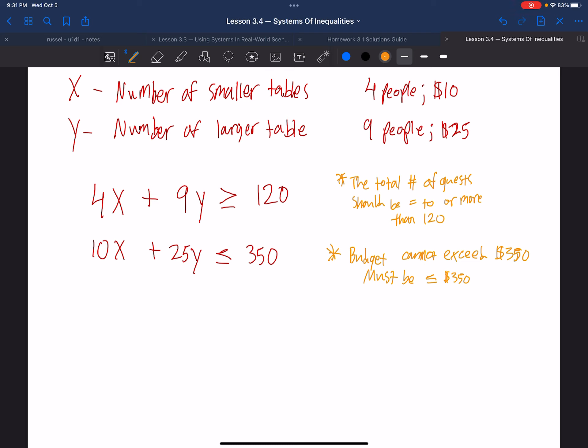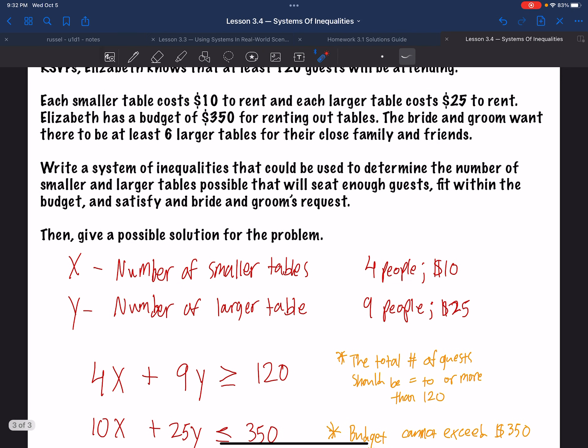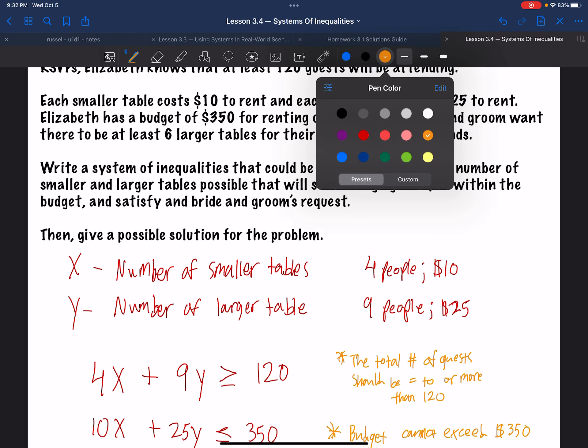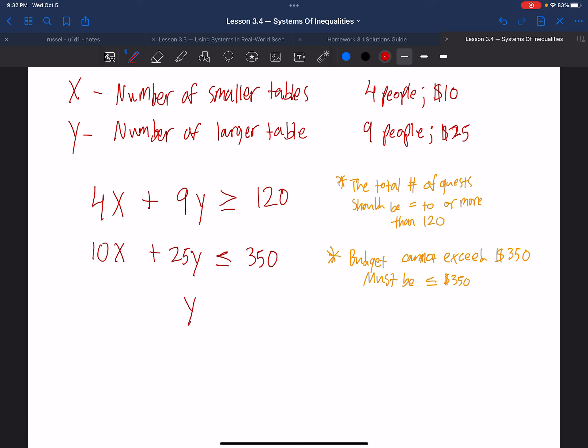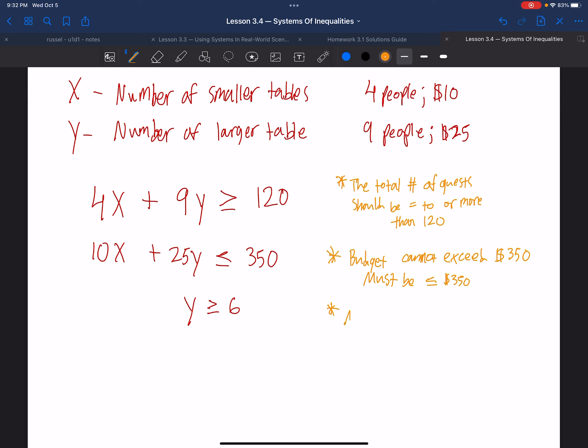So I might write that again here. Budget cannot exceed $350. Must be less than or equal to $350. Nice. Now we're just one away now. Now we just need to satisfy the groom and bride's requirement. That requirement being that they want at least six larger tables. So the number of larger tables, y, should be more than six. So y should be more than or equal to six, right? Must have six or more large tables, which in this case is y. And there you go. That is our system of inequalities. It's three equations.